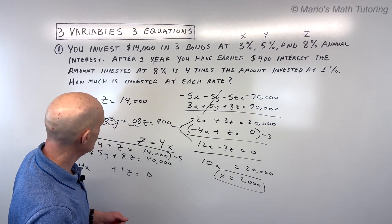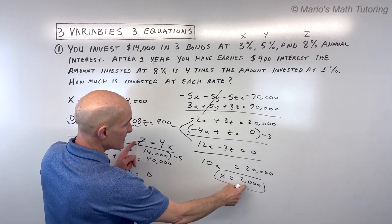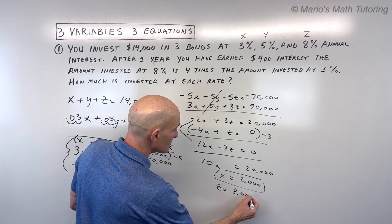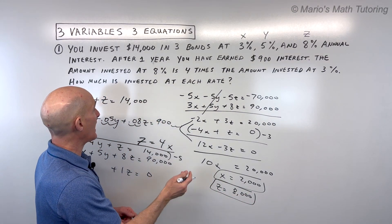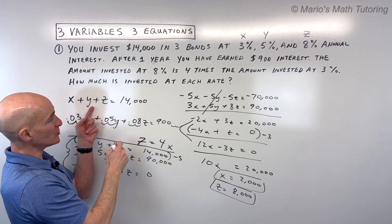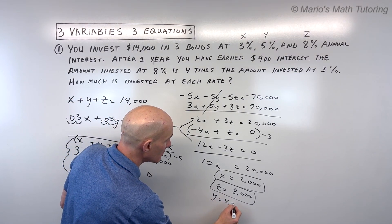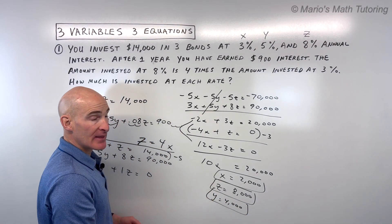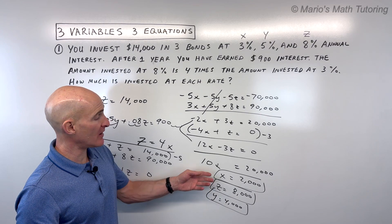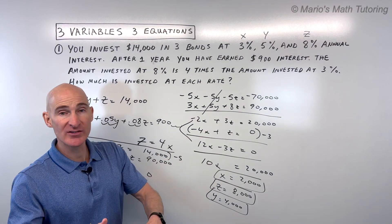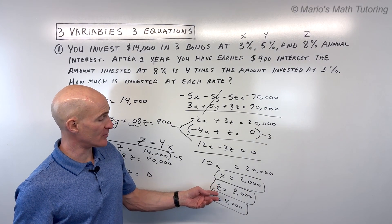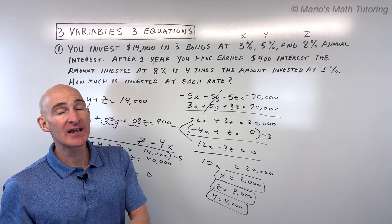Plugging X back into Z equals 4X: 4 times $2,000 is $8,000, so Z equals $8,000 invested at 8%. Since the total invested is $14,000, plugging X and Z back into the first equation gives Y equals $4,000 invested at 5%. Write the final answer as a sentence: $2,000 invested at 3%, $4,000 at 5%, and $8,000 at 8%.